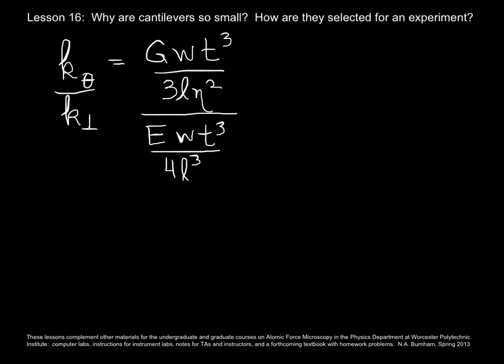Let's say you wanted a cantilever for an experiment that was very stiff in the lateral, or the torsional direction, resistant to friction, but very compliant in the normal direction, so very low spring constant. What you can do to figure out which one to purchase, or perhaps you're a designer of cantilevers, is to divide one spring constant by the other, and then look at what that tells you. So here are those two expressions for the torsional and normal spring constant. We see a lot of cancellations for the width, for the thickness, and one factor of L.